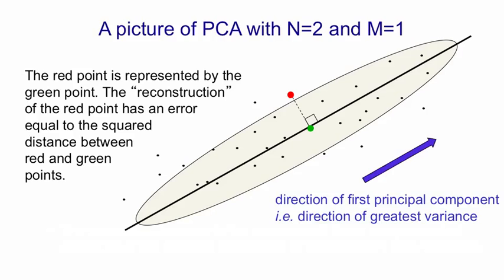And so to represent the red point, we'd represent how far along that direction it lay. In other words, we'd represent the projection of the red point onto that line, i.e. the green point.